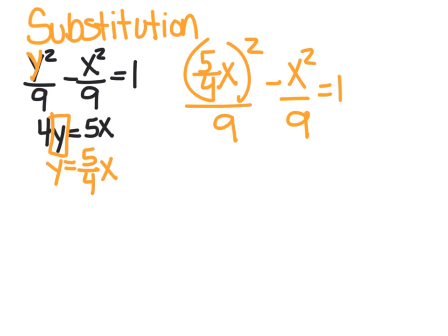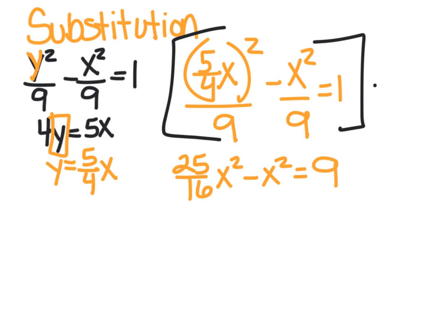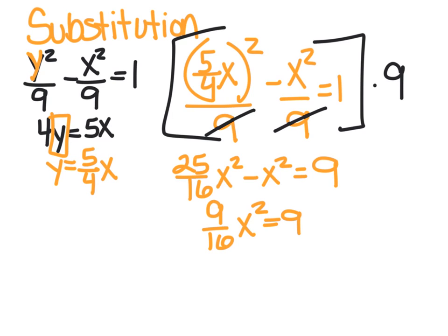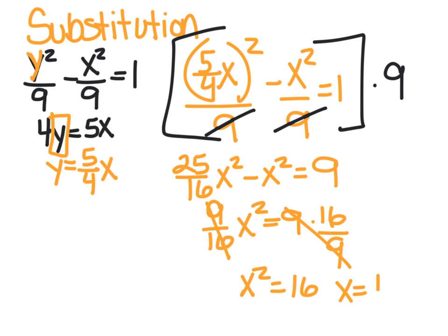I need to clean this up a bit. Because they're both divided by 9, I'll multiply everything by 9. So 5 fourths squared is 25 sixteenths, giving 25 sixteenths x squared minus x squared equals 9. Now I can combine: 25 sixteenths x squared minus 16 sixteenths x squared — 25 minus 16 is 9 — so 9 sixteenths x squared equals 9. Then multiply both sides by the reciprocal, so x squared equals 16. Cross out the 9s, and x equals plus or minus 4. You can have two answers on these, so we need both the plus and minus.